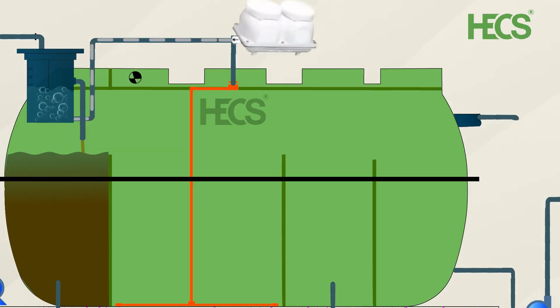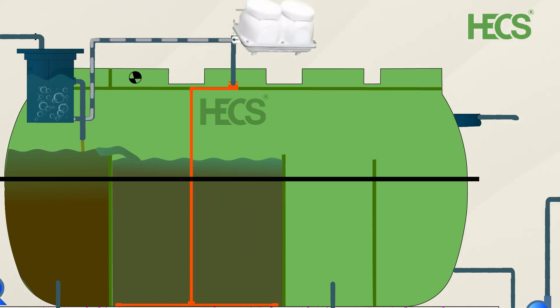In the third chamber, the aeration chamber, magnetic diaphragm blowers infuse oxygen through aeration while ensuring minimal noise and low power consumption, optimizing the breakdown of organic matter.